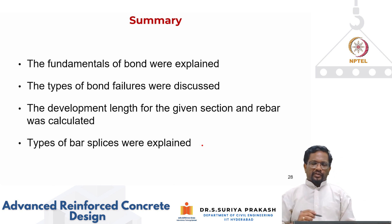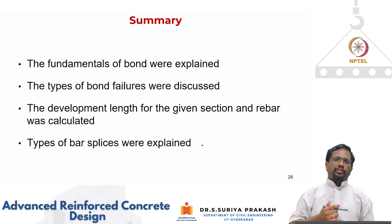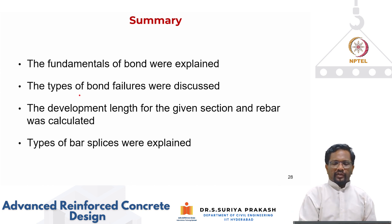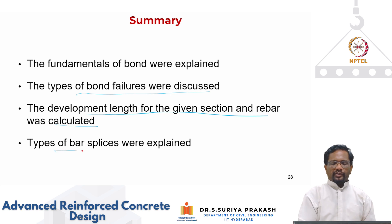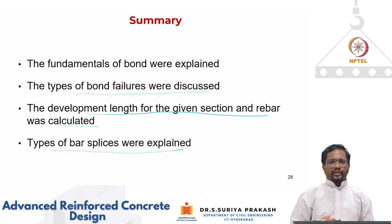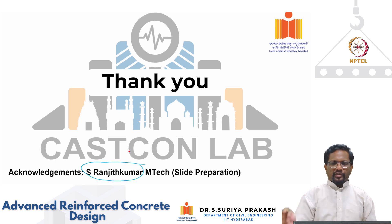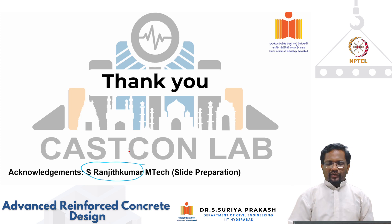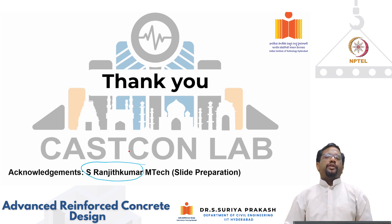To summarize: we discussed what bond is and why it is required in flexure — so that plane sections remain plane and bending theory is valid. We looked at bond failure modes including horizontal and vertical splitting. We calculated development length using IS code provisions and examined bar splice types used in the field. References include Wight and MacGregor, which explains many of these mechanisms well. Thank you.